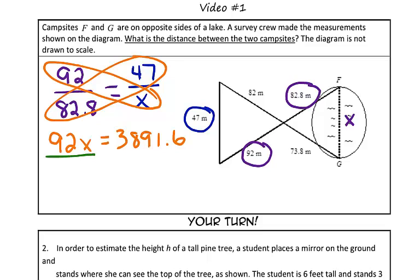To solve for X, we're going to use inverse operations and divide both sides by 92. So X is equal to, do that in your calculator, check your work. I came up with 42.3 meters. Nice work.